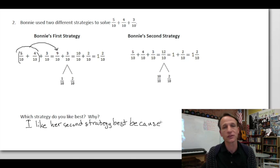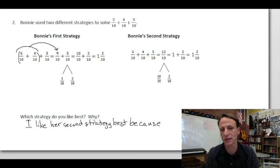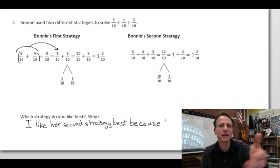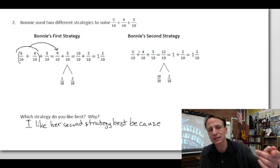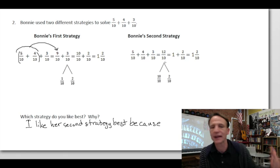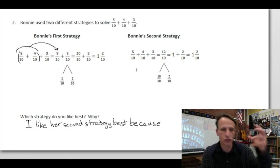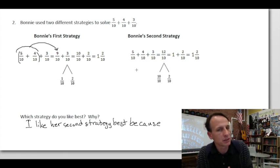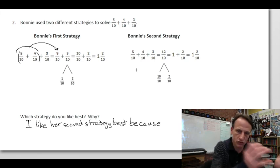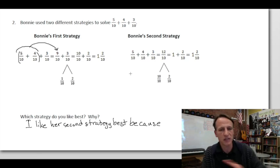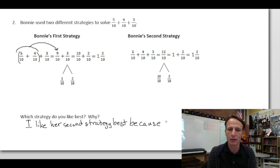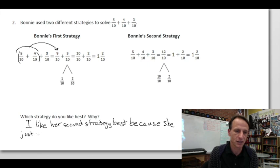You can't just write 'I like her second strategy best' — it has to be an actual explanation. What makes the second strategy easier? I look at five plus four plus three and you just add them all up — there's no decomposing in the middle of adding. She just adds everything up and then decomposes to create a mixed number.